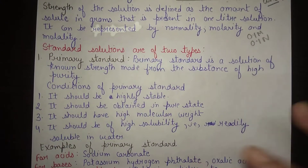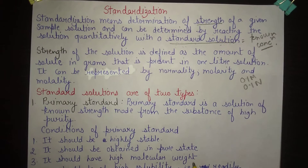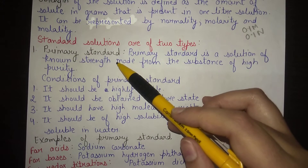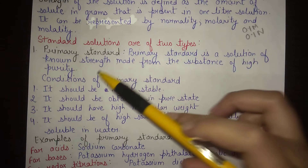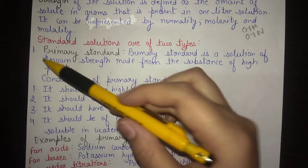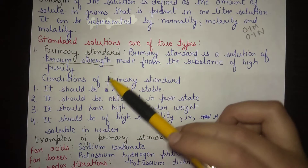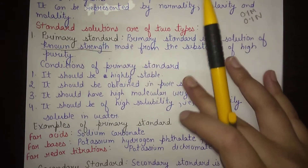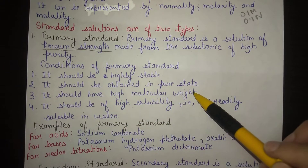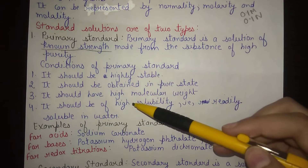Standard solutions are of two types: primary standard and secondary standard. A primary standard is a solution of known strength made from a substance of high purity. There are certain conditions a primary standard must follow: it should be highly stable, it should be obtained in the pure state, it should have high molecular weight, and it should be of high solubility — meaning it should be readily soluble in water.